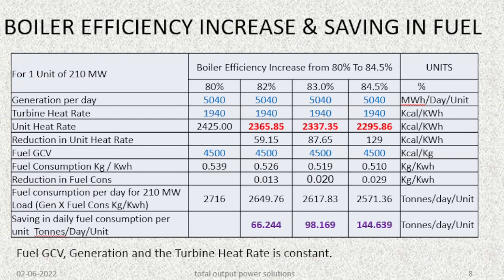If the fuel GCV is constant at 4500 kcal/kg, the fuel consumption rate would decrease from 5.539 to 0.510 kg/kWh. For 210 MW, the maximum saving in daily fuel consumption per unit — from 80% to 84.5% boiler efficiency — would be 144.639 tons per day per unit. The fuel GCV, generation, and turbine heat rate are assumed constant.